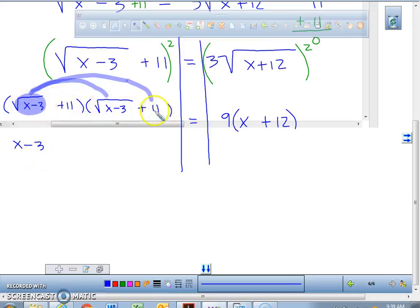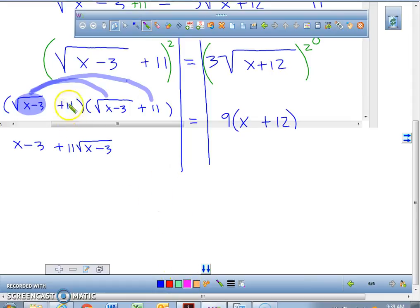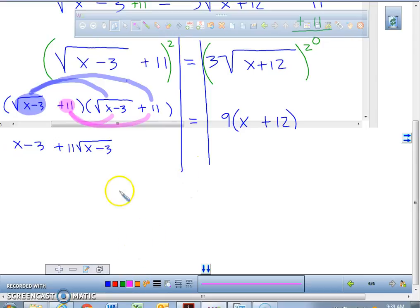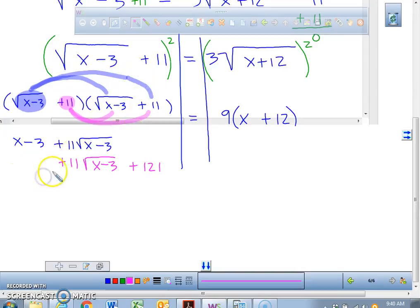Now, this one, we have 11 times the square root of x minus 3. That's going to be plus 11 times the square root of x minus 3. We have to multiply this to both terms. So 11 times this radical is going to be 11 times the exact same radical, and 11 times 11 is going to be 121.